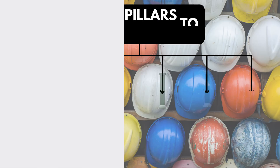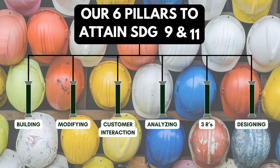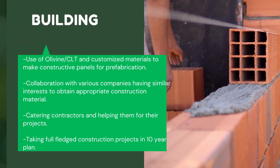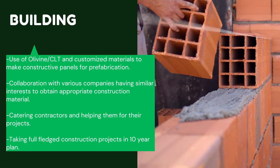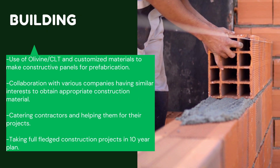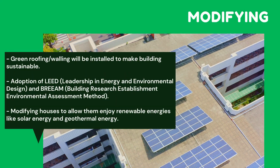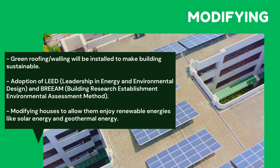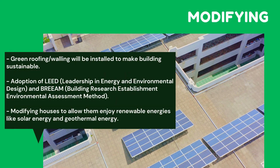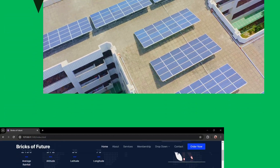So, what are we actually doing? Here are our six pillars to attain the 9th and 11th SDG. We will be using olivine to make panels which will absorb carbon emissions from the atmosphere. Installation of green roofing and usage of solar and geothermal energy will contribute to sustainability.